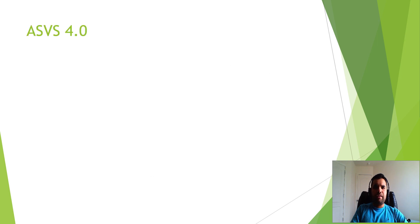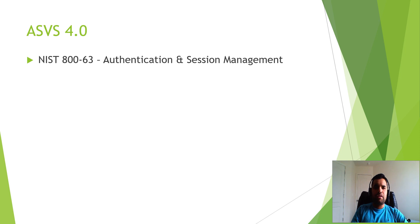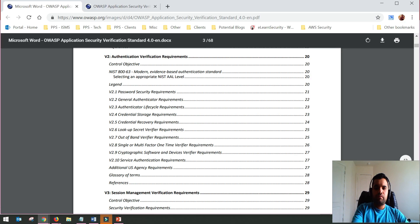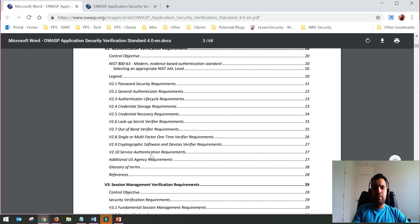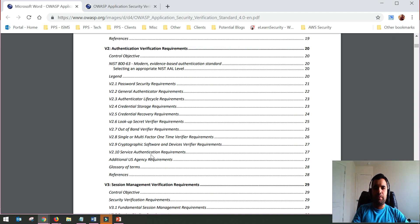The first thing they have done within ASVS 4.0 is they have included the NIST requirements from SP 800-63 into the ASVS. Mostly what they have done is the authentication and session management sections now include requirements from NIST as well. As we all know, NIST is an evidence-based sort of audit framework, and that is what they have incorporated here.